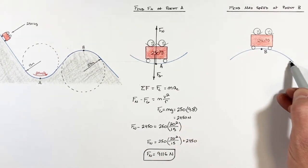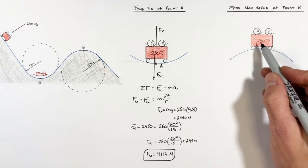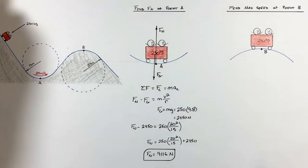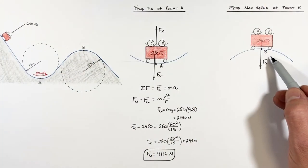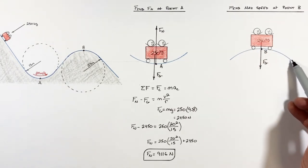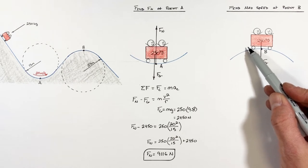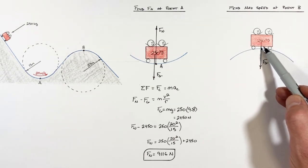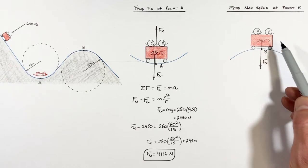So as the cart goes over the top of this hill it's accelerating downward. Now gravity is going to be acting on this cart no matter how fast the cart goes over the top of the hill. But if the cart goes over the top of the hill slowly there's going to have to be a normal force acting upward on this cart.